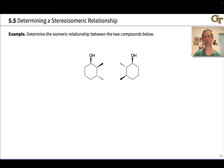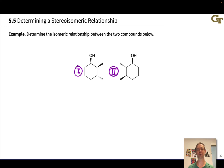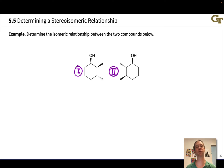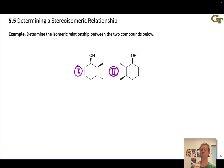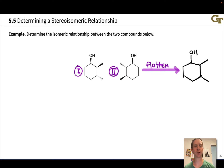To practice, let's determine the isomeric relationship between two compounds. I'll call them compound 1 on the left and compound 2 on the right. These have the same molecular formula — eight carbons, one oxygen, and 16 hydrogens. You can pause and draw in the implied hydrogens to verify. So they definitely have the same molecular formula.